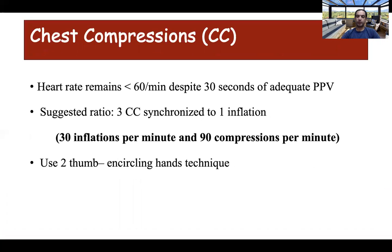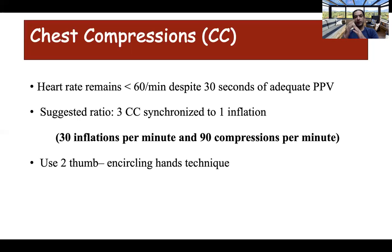Chest compression should be considered whenever the heart rate is below 60 per minute despite 30 seconds of adequate and effective positive pressure ventilation. It is administered in synchrony with inflation: for every three chest compressions there is one inflation, giving a total of 120 events per minute — 90 compressions and 30 inflations. There are two techniques: the two-thumb technique, where the chest is encircled and compressions given with two thumbs, and the two-finger technique. Smaller studies have shown that the two-thumb technique ensures better blood pressure and less operator fatigue.